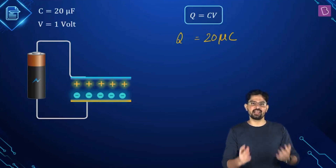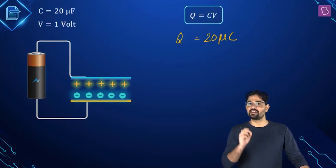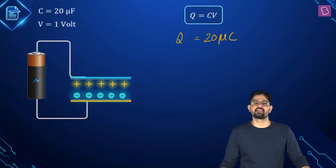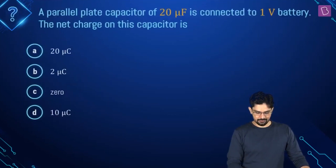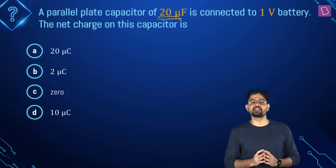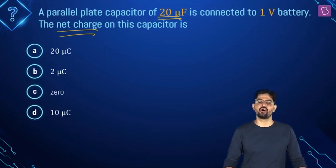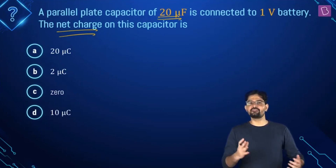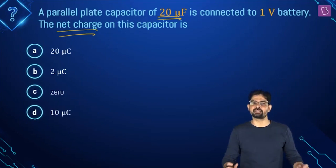You might take option A as the right answer. But what if I tell you that you are wrong — option A is incorrect, and in a competitive exam you would have lost precious easy marks. The question is not asking for the charge on this capacitor; it's asking for the net charge. Whenever we say 'charge on the capacitor,' this means the magnitude of charge on either of the two plates, and in that case 20 microcoulomb is correct.